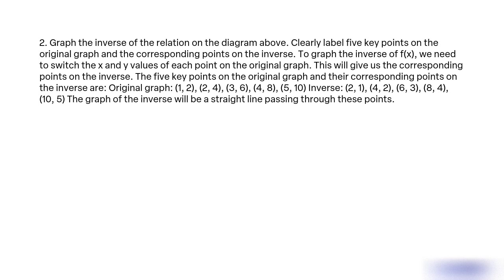The five key points on the original graph and their corresponding points on the inverse are: Original graph: (1, 2), (2, 4), (3, 6), (4, 8), (5, 10). Inverse: (2, 1), (4, 2), (6, 3), (8, 4), (10, 5). The graph of the inverse will be a straight line passing through these points.